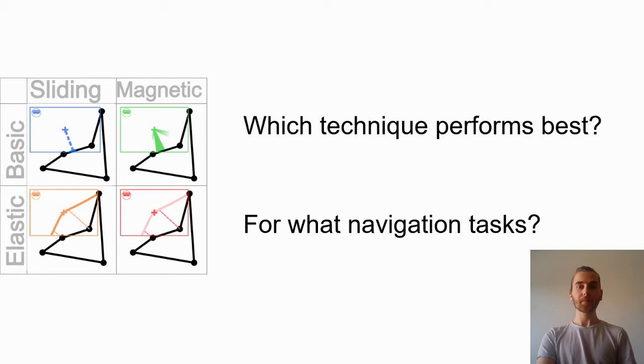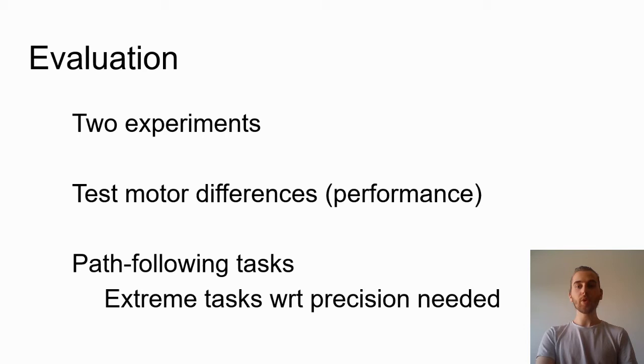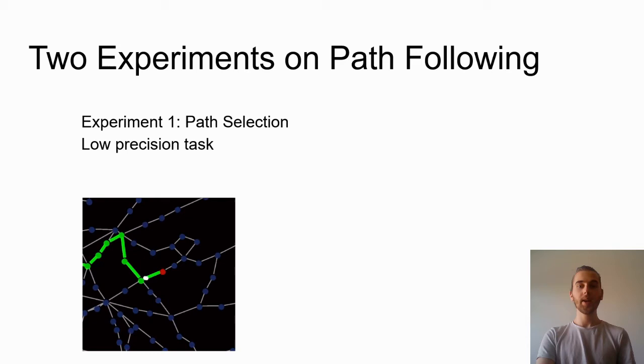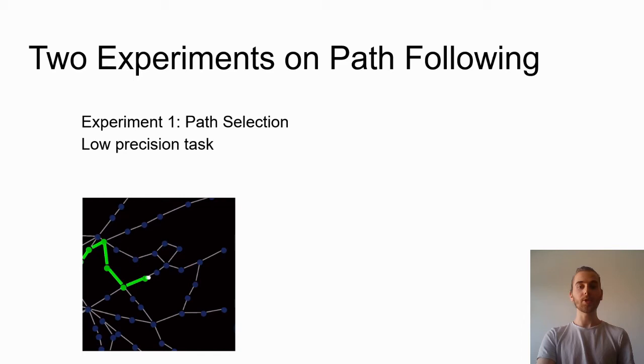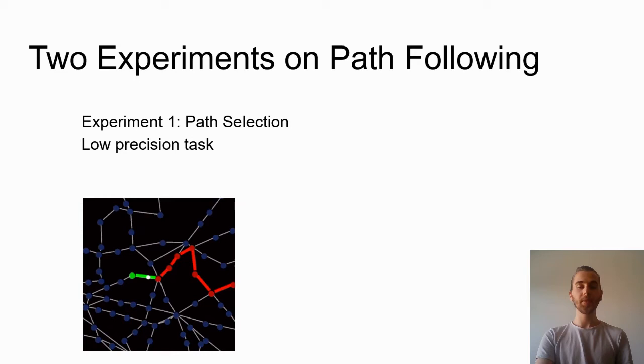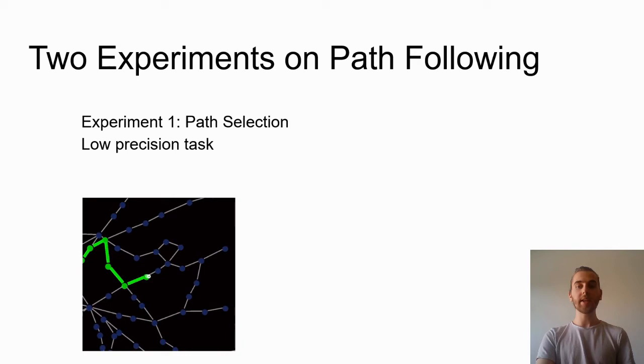After developing the techniques, we wanted to know which AR cursor performs best, and for what types of navigation tasks. We chose to evaluate these techniques in two lab experiments, focusing on path-following tasks that are central in network navigation. We evaluate the techniques along their motor differences, thus focusing on the speed of completion of a path. In each experiment, we focused on an extreme case for the task. The first task is a simple path selection. To validate a part of the path, either a node or link, you only have to touch each with the designated cursor. It is thus a fairly easy task that does not require a lot of precision. We call this path selection. What you see here is a baseline condition without any technique.